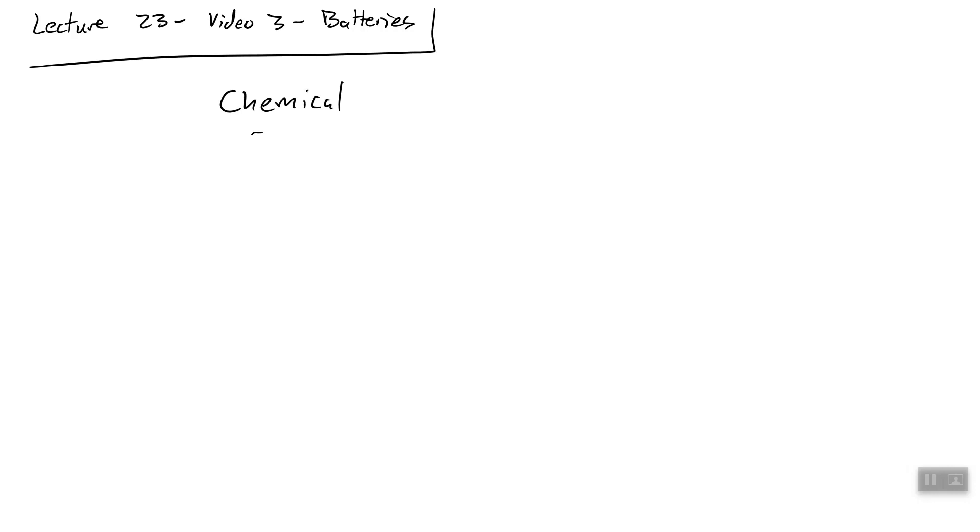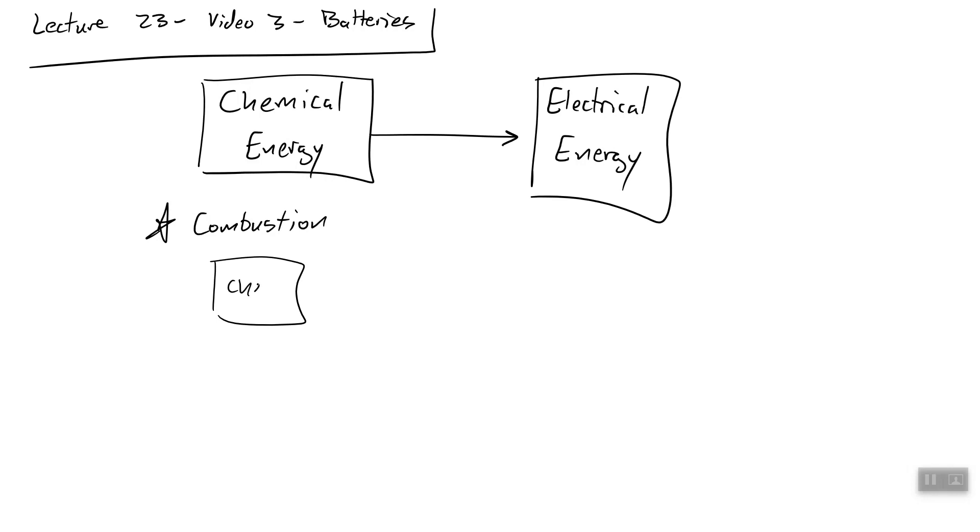A battery, in the most basic sense, is a technology that converts chemical energy directly into electrical energy. This probably sounds familiar. In a power plant, we convert chemical energy into electrical energy. But with combustion, there's something in between. We convert chemical energy into thermal energy by burning, which is then converted into electrical energy. Batteries are direct conversion.